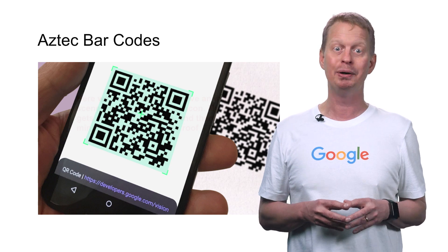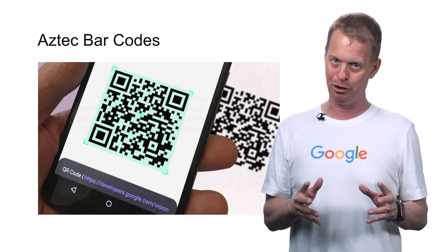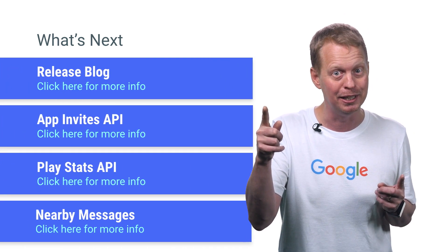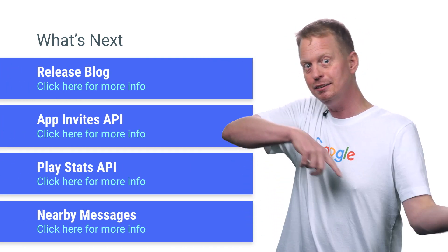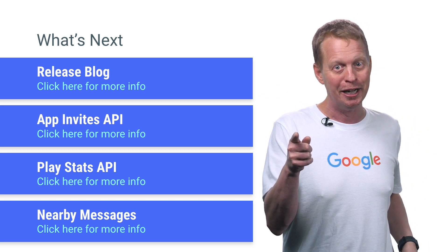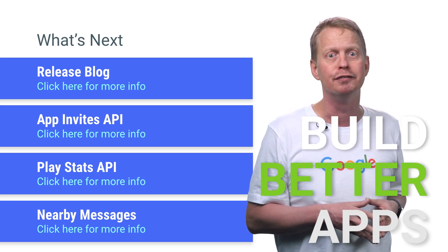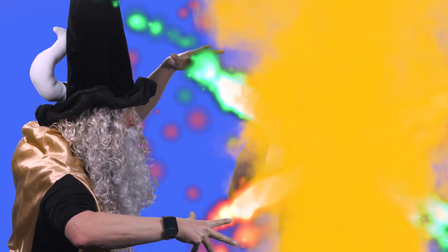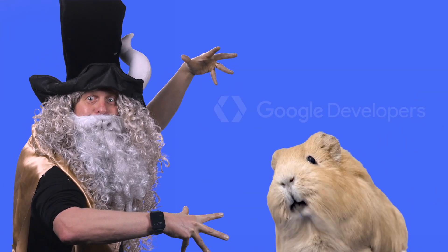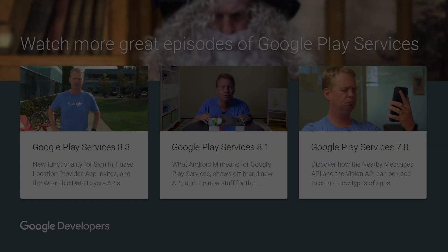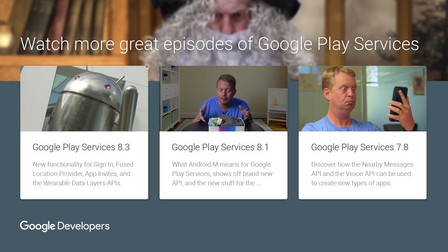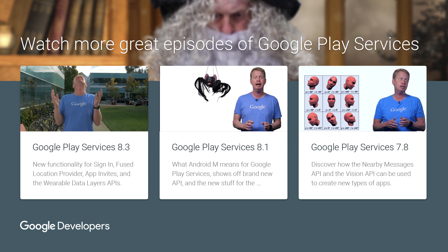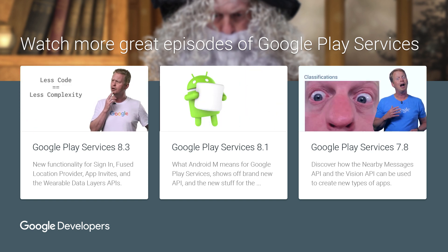And for the Mobile Vision API, we now have added support for Aztec barcodes. And that's it for the highlights of this release. Check out some of these other resources as well. Now it's your turn to build better apps using Google Play Services — so go out there and create some great apps! But don't forget to tell us all about it. Yes! Revenue prediction!